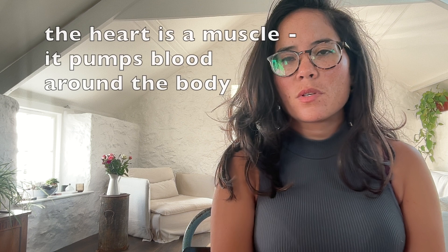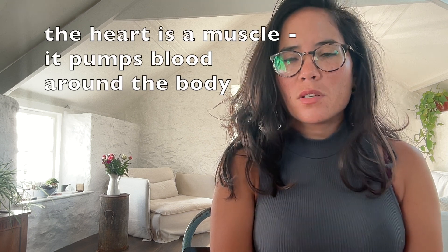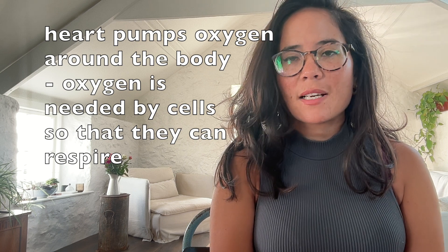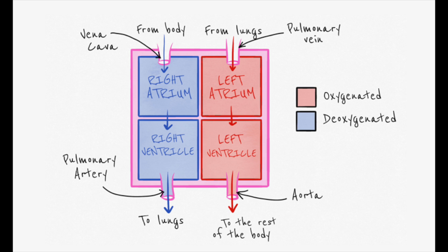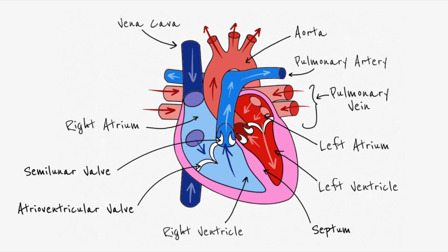The heart is a muscular organ which pumps blood around the body. The blood transports many useful substances, most importantly oxygen needed for cellular respiration. In terms of the anatomy of the heart, it has four chambers — two atria and two ventricles. Be careful when labelling the heart: the left and right sides are flipped compared to what you might expect, because if you placed the diagram into your chest that's how the heart would actually appear. You have the left atrium, left ventricle, right atrium, and right ventricle. The separation between the left and right sides is called the septum.